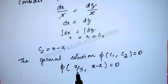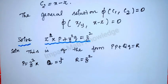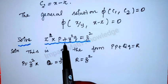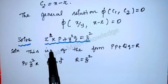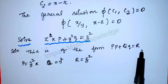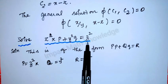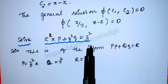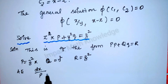The general solution is φ(c1, c2) = 0, where c1 = x/y and c2 = x − z. The next problem is z²xp + y²q = z²a. This is of the form Pp + Qq = R, where P = z²x, Q = y², and R = z²a.